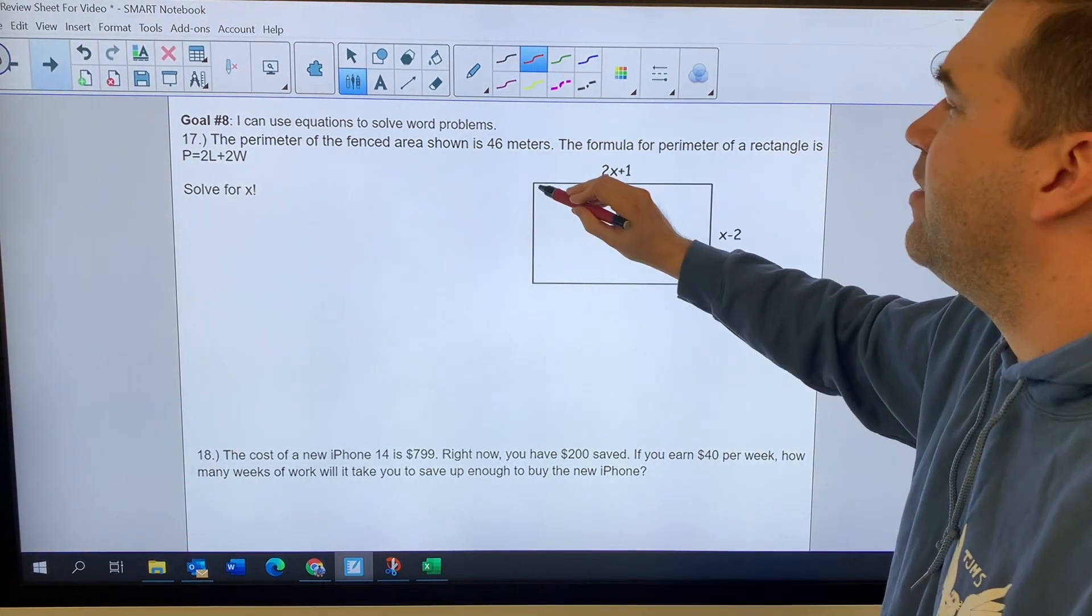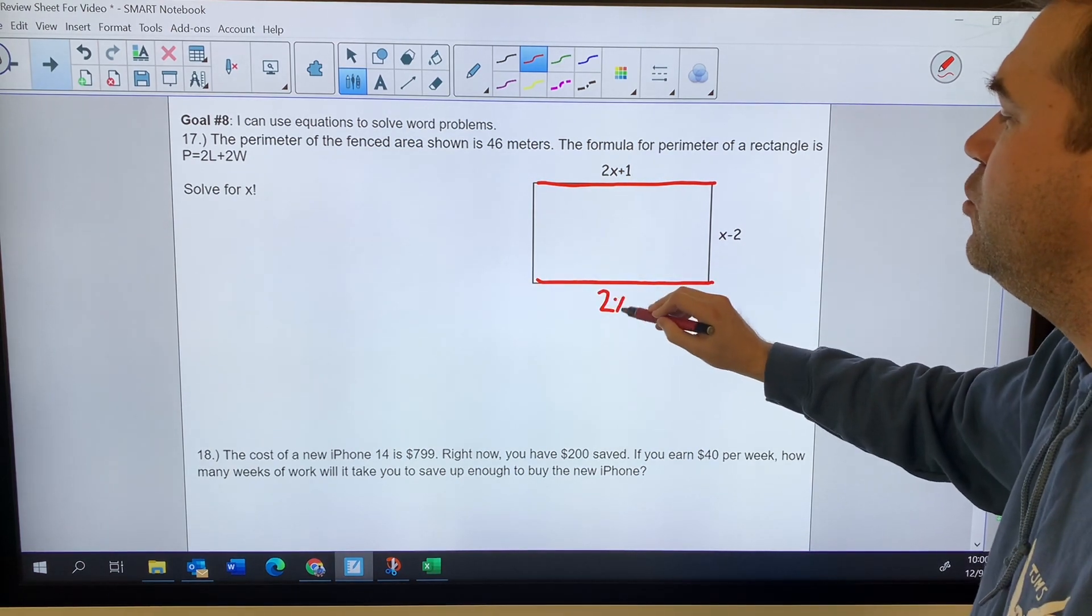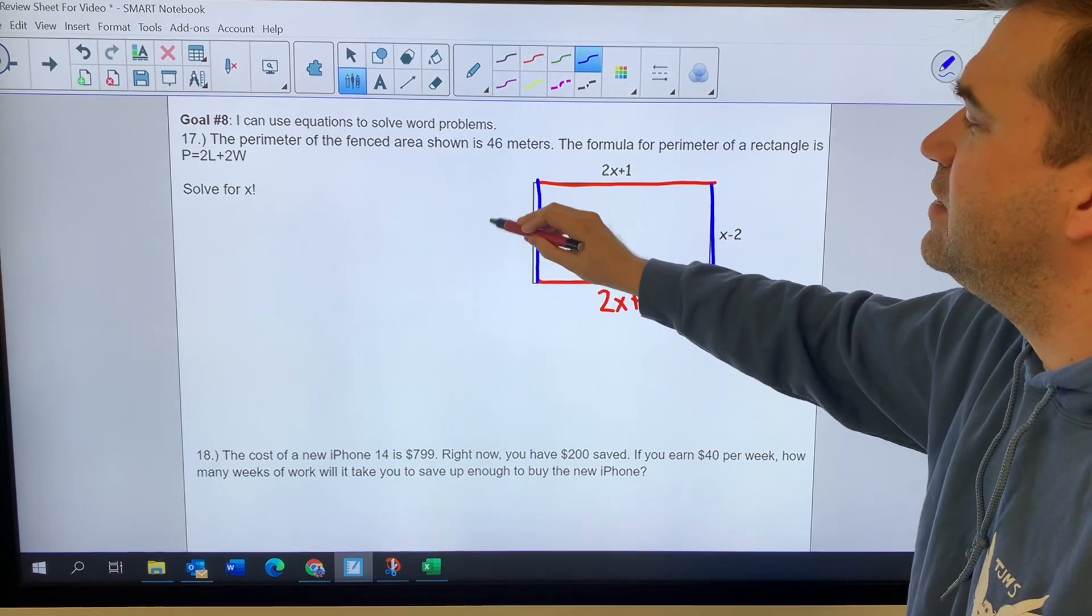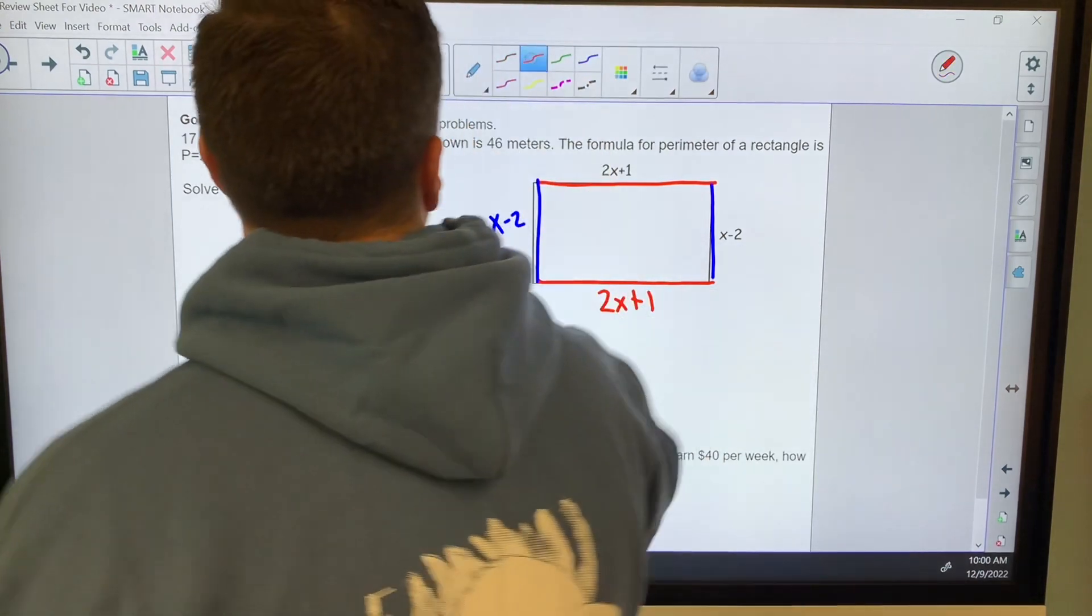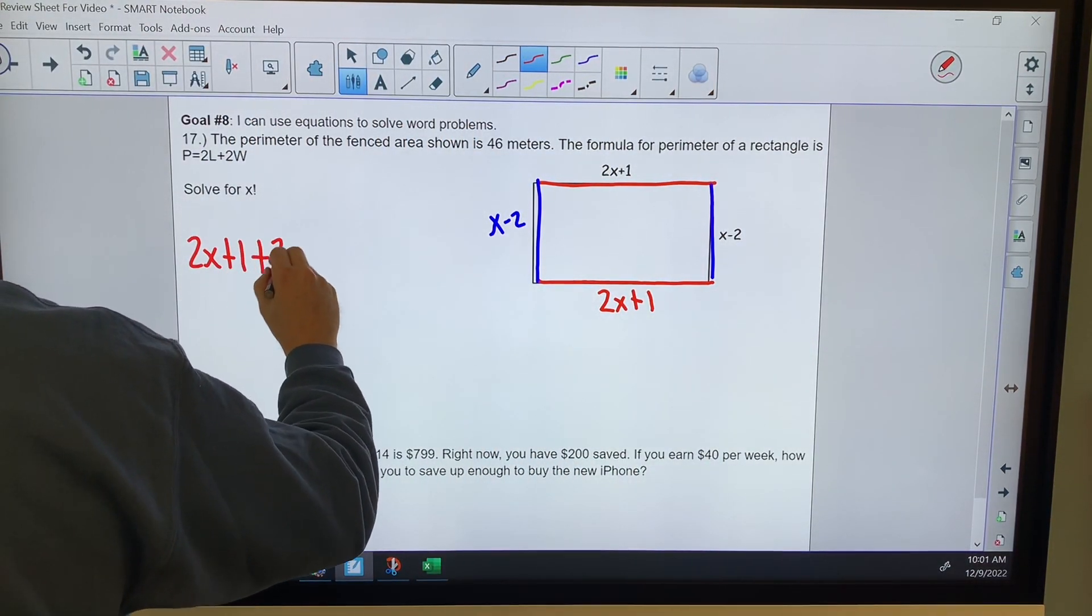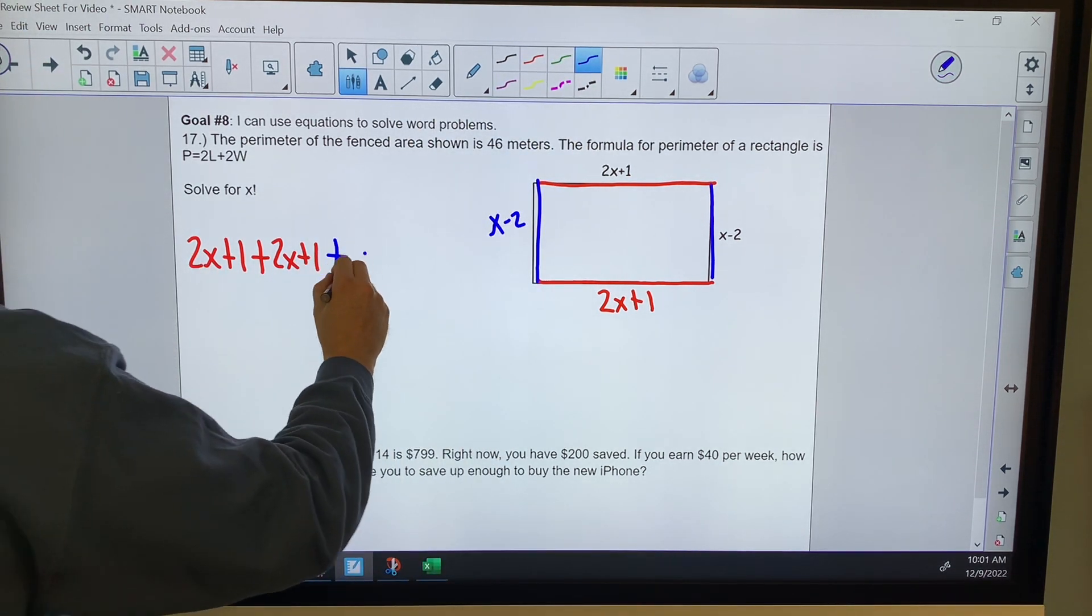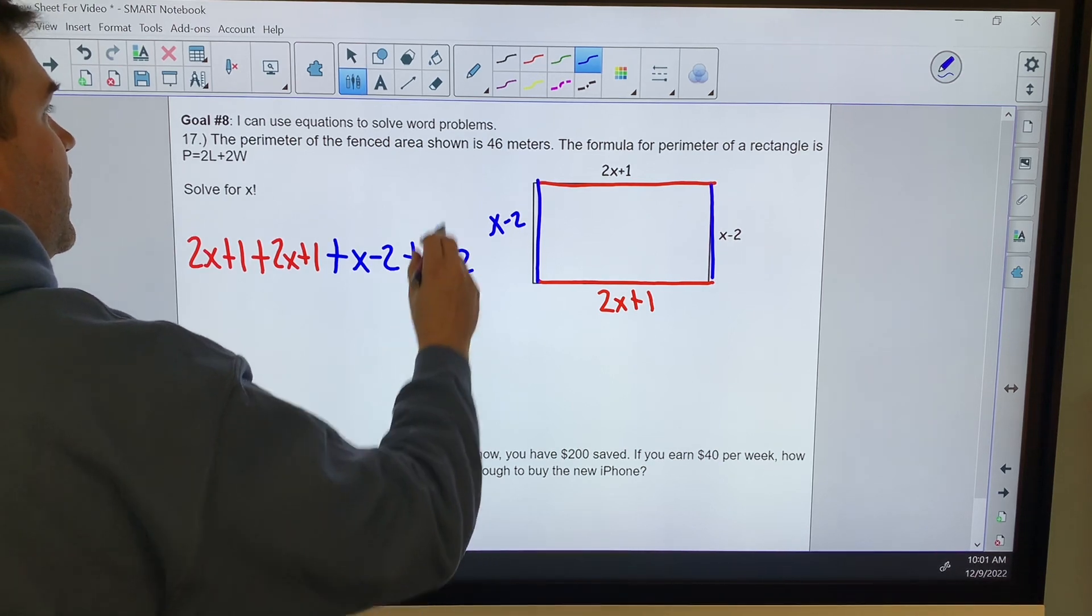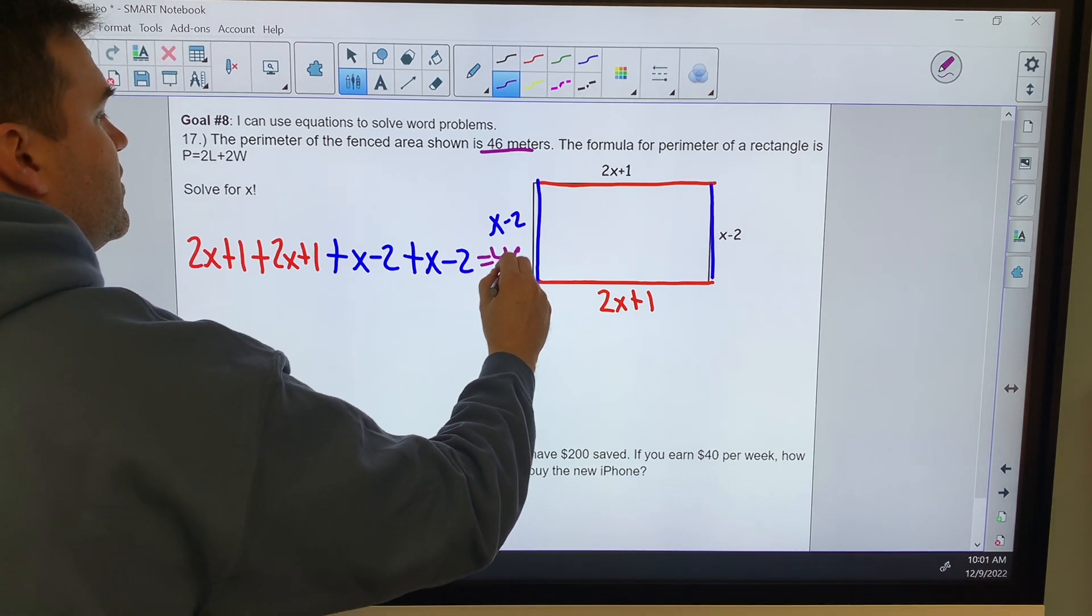I'm going to add all four sides together. I've got 2x plus 1, which means this one is also 2x plus 1. We've got x minus 2, which tells me this side is also x minus 2. When I add all four of those together, I end up with 2x plus 1 plus 2x plus 1 plus x minus 2 plus x minus 2. When I add all those together, that's going to be the perimeter, which is 46.